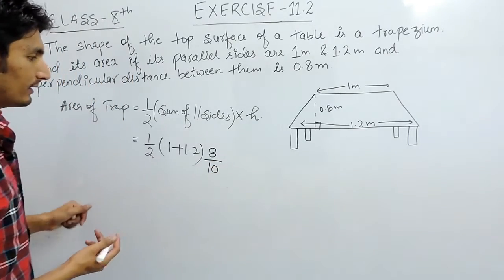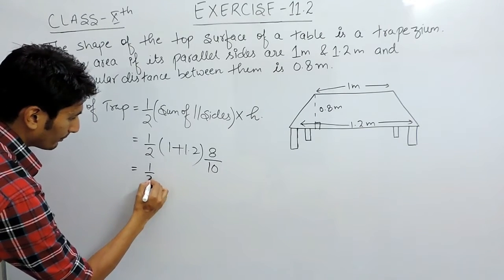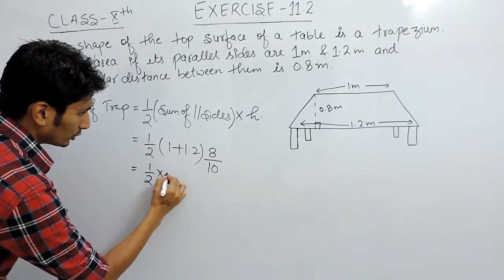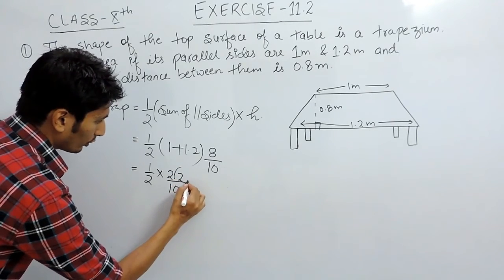If I remove decimal, that will be 8 upon 10. This is 1 upon 2. This is 2.2. Again removing the decimal, this is 22 upon 10.